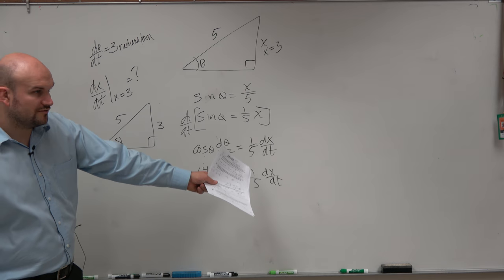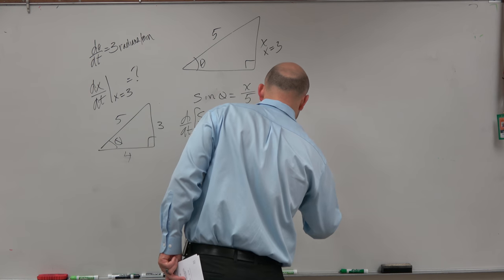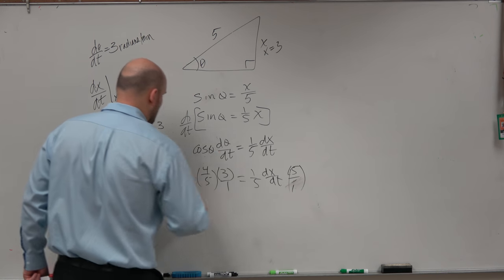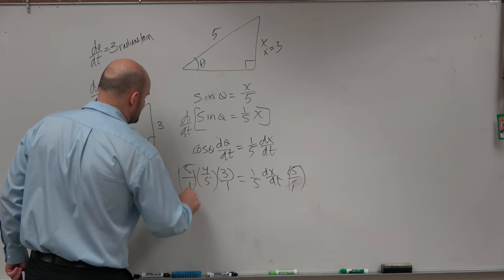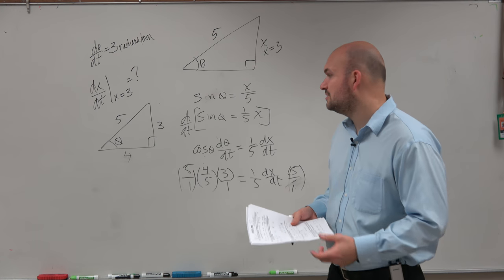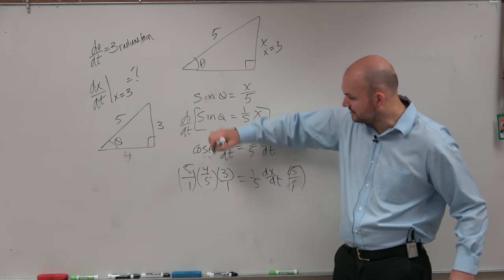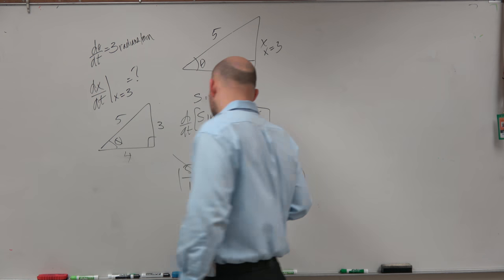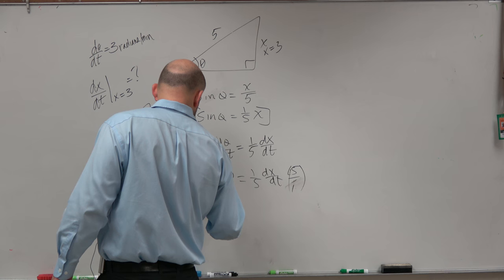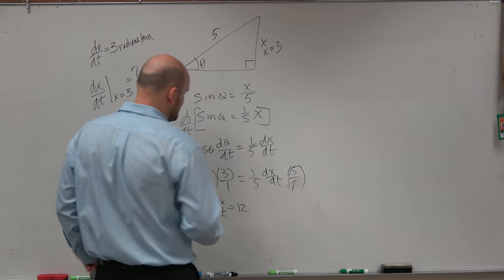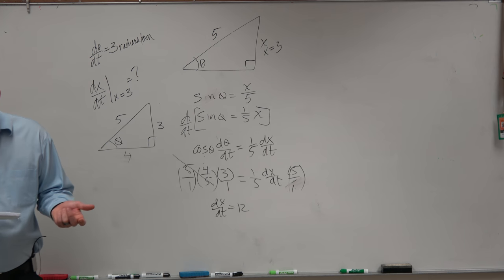So if all we're trying to do is solve for dx dt, I'll multiply by 5, 5 over 1. Remember what I told you guys last class period about not simplifying to the very, very end, right? Especially when you don't have a calculator. Rather than multiplying this all out, if I just leave this multiplied, I notice that the fives divide out, and I can just multiply 4 times 3. So dx dt is just equal to 12, which was answer E.